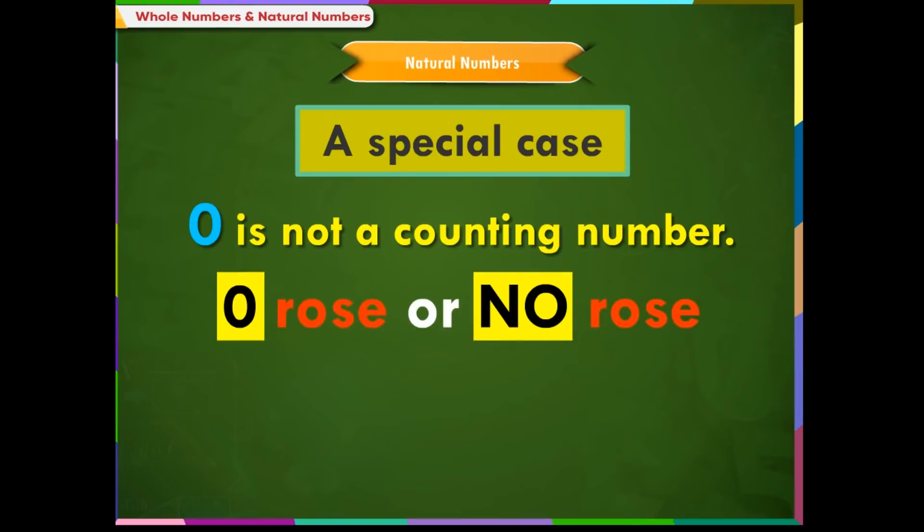For example, if there are no roses, then we say that there are zero roses. Therefore, zero is not a counting number.